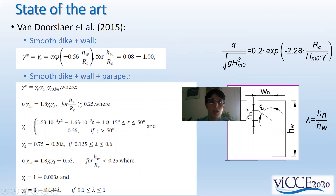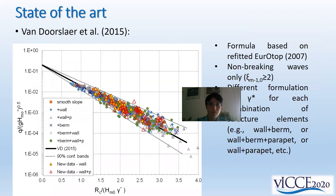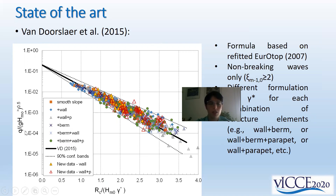They proposed a series of different formulations for gamma star according to the different combinations of structural elements. So there is a formula for gamma star in the case of just a wall on top of the dike, a wall with parapet, and so on — different formulations for each different situation. The slide shows the optimal agreement between the experiments by van der Sleer and the EurOtop 2007 formula.